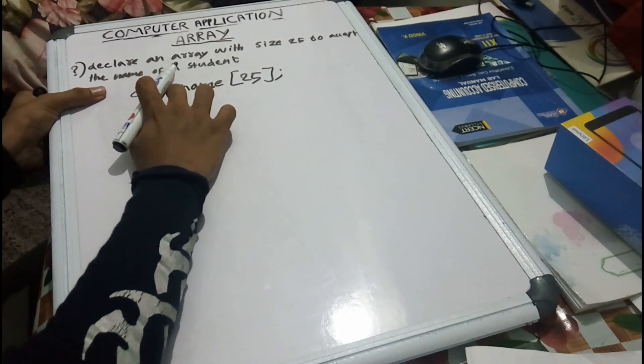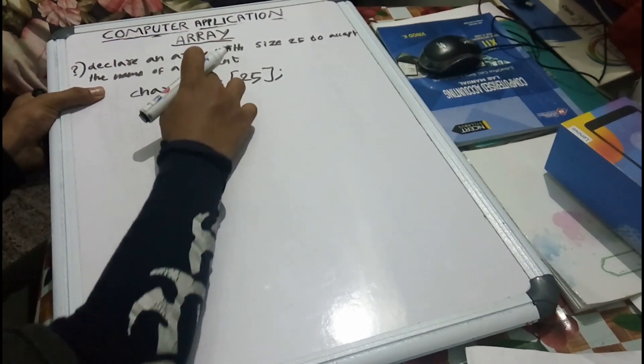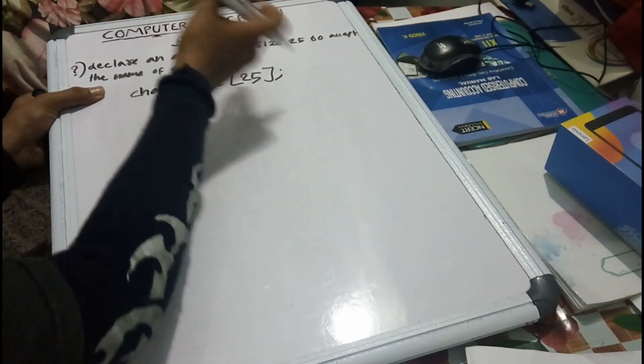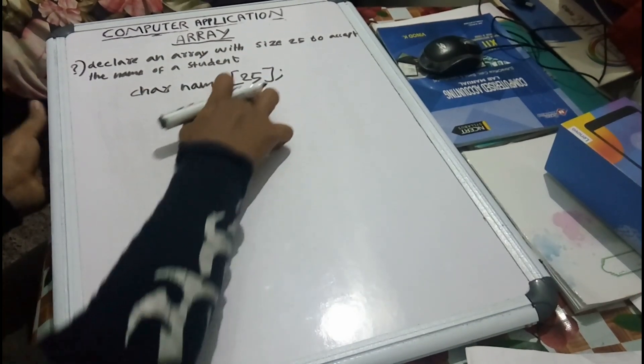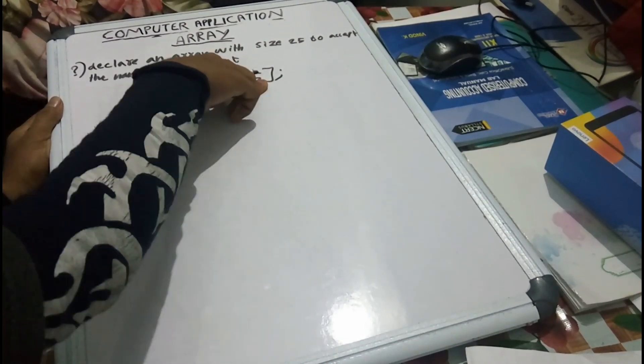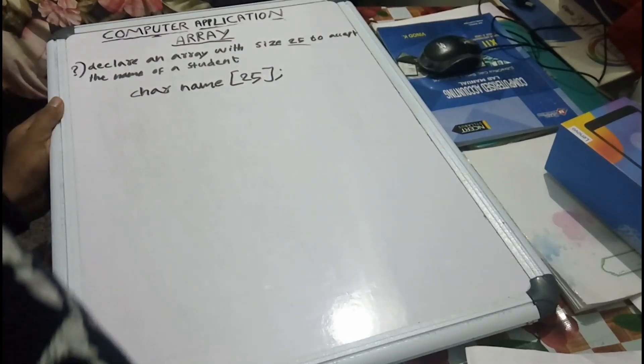If you have a data type, you can give a name. If you have a student's name, you can give a pin of 25. If you have 25, you can give it here. If you have a question, you can give it here.